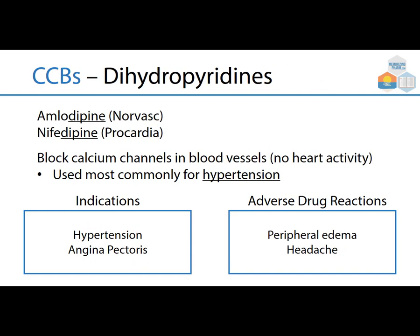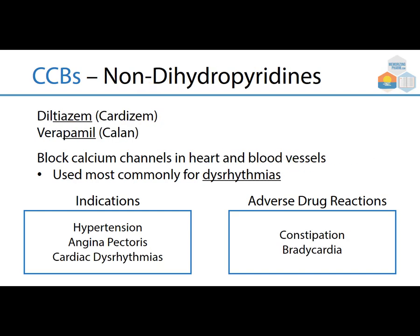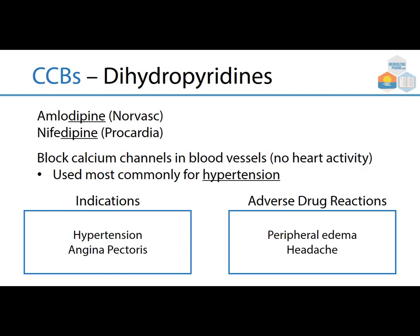Dihydropyridine calcium channel blockers include amlodipine (brand Norvasc) and nifedipine (brand Procardia) — notice the '-dipine' ending, sometimes remembered as 'dip in blood pressure.' These block calcium channels in blood vessels only, with no heart activity, so they are not used for dysrhythmias. Most commonly used for hypertension and angina pectoris. Adverse drug reactions include peripheral edema and headache from vasodilation.